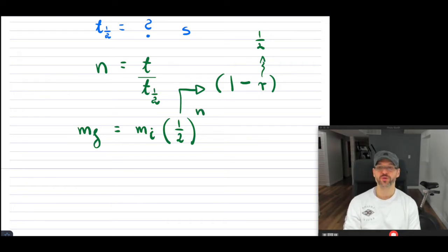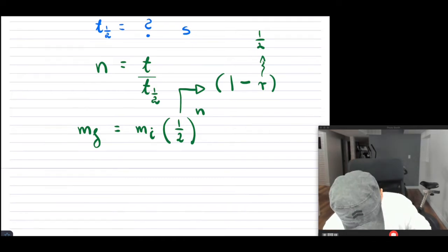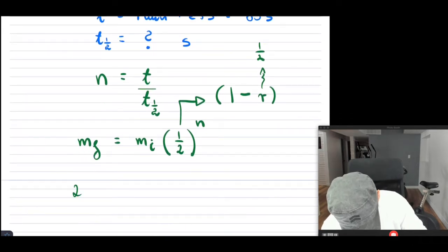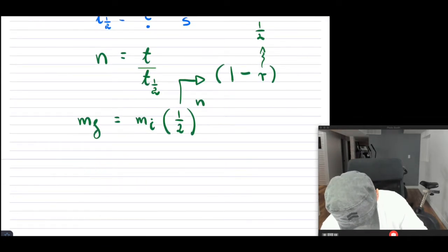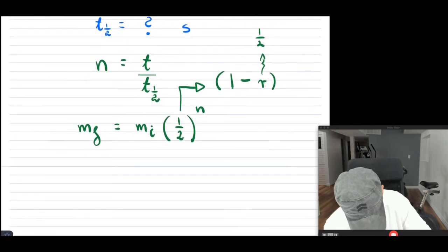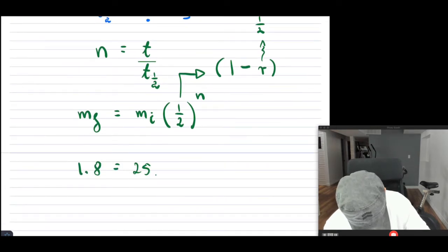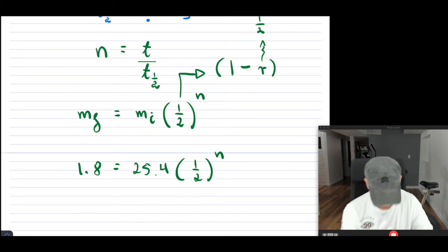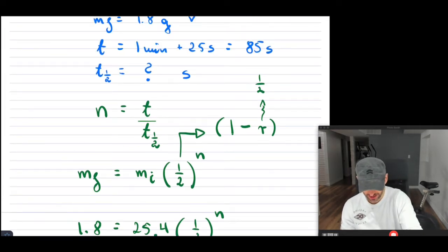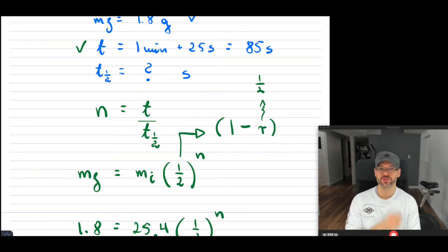So now if I substitute everything in here, now I know what N is, so I'm going to be solving for N in just a little bit of time. So MF was 1.8, MI was 25.4, this is 25.4, one and a half, N. So I can solve this for N, and notice I have T here as well. So I know that T is 85 seconds.